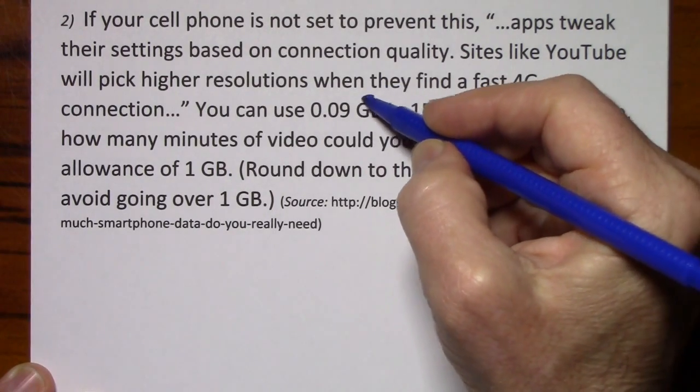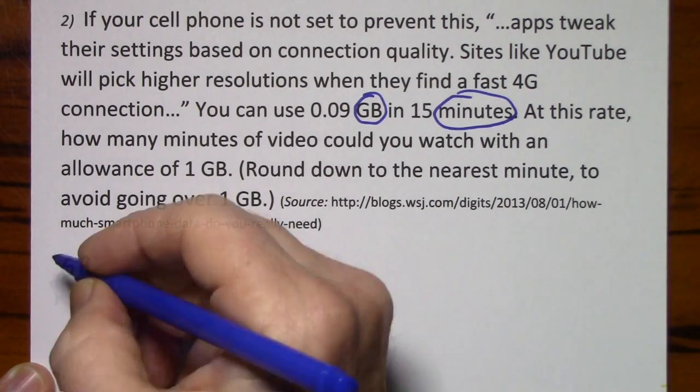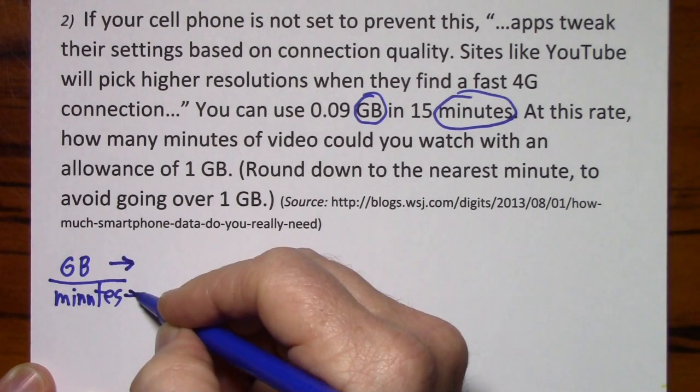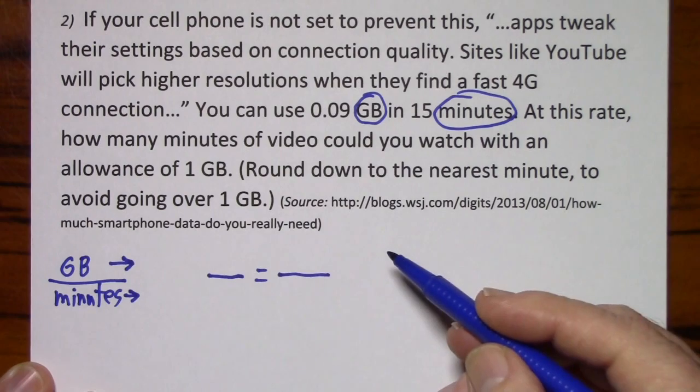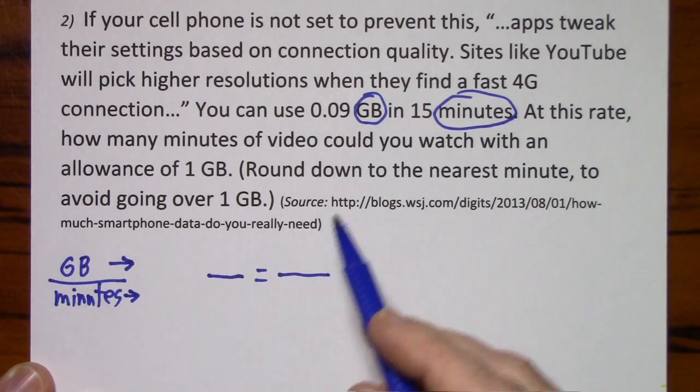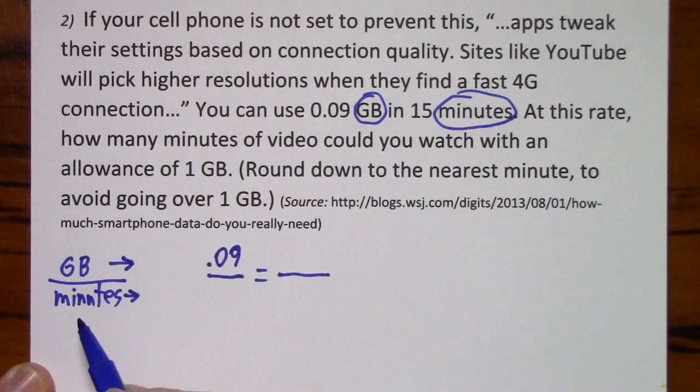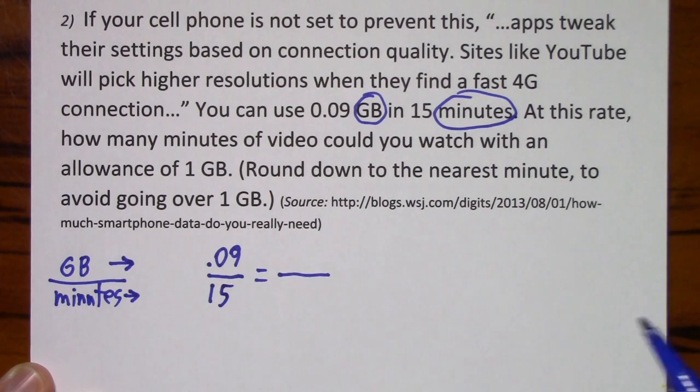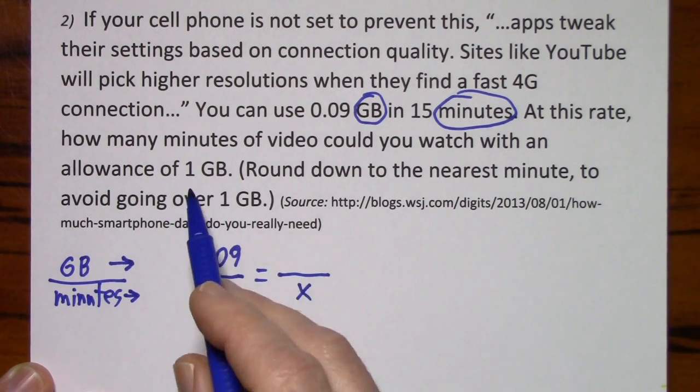So our categories are going to be gigabytes and minutes. I just stick with that. I'm going to give myself some room if I want to do some work here, and then just plug in the numbers. So 9 hundredths is 15 minutes, how many minutes? So minutes are on the bottom, 1 gigabyte.